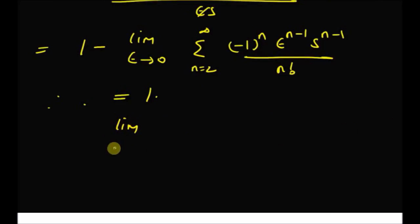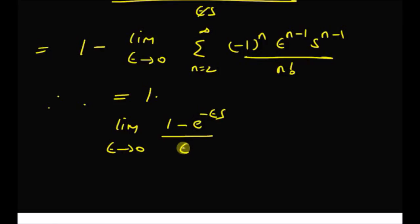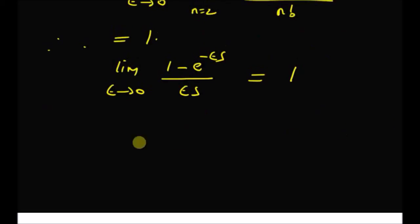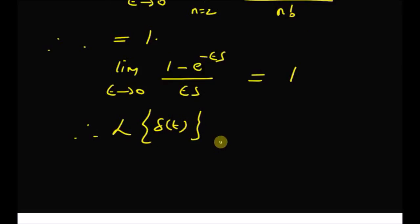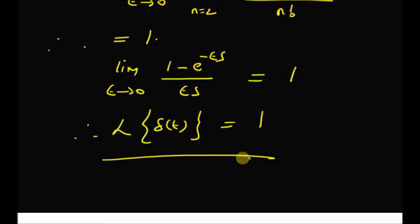Therefore, the limiting value equals 1. That is, limit as epsilon tends to 0 of (1 minus e to the power minus epsilon s) divided by (epsilon times s) equals 1. Therefore, the Laplace transform of delta of t, using the definition of the impulse function as a limiting case of the rectangular pulse, is equal to 1. Thanks for watching.